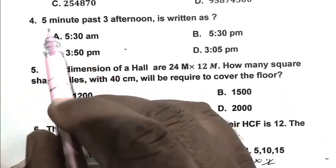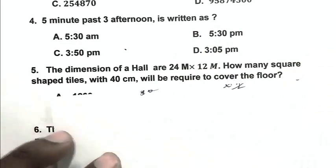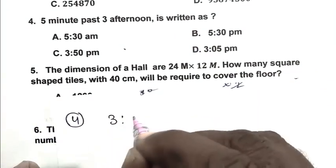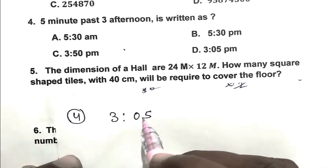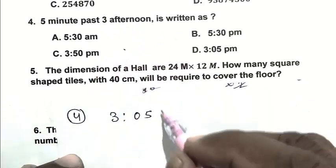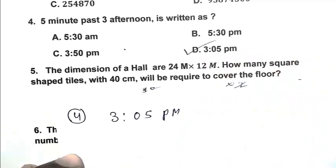Question number four: 5 minutes past 3 afternoon is written as? So friend, we can write it as 3:05. Because 5 minutes we can write as 05, and it's afternoon, so we can write PM. So D is the right answer.